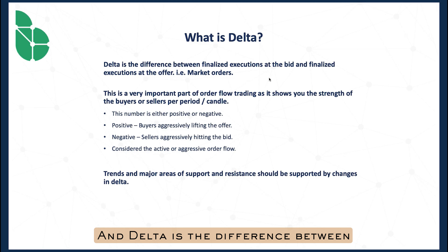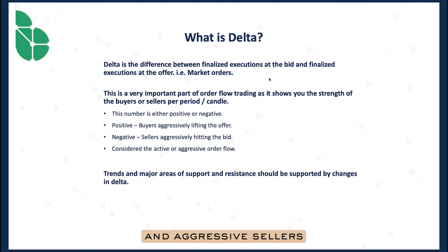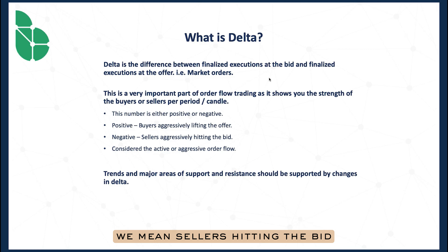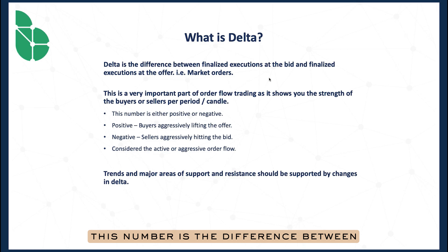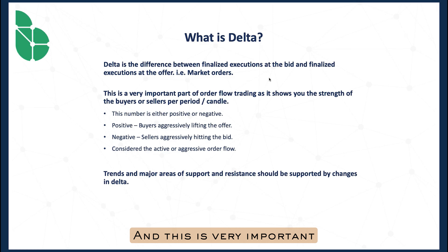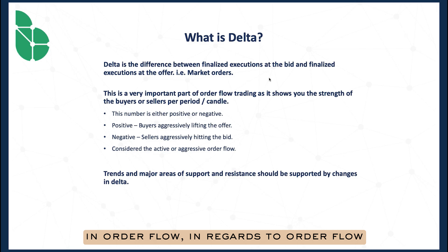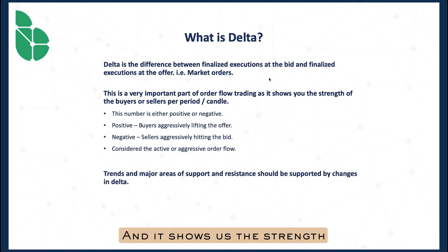Delta is the difference between aggressive buyers and aggressive sellers — the difference between finalized executions at the bid, where sellers are hitting the bid, and finalized executions at the offer, where a buyer lifts the offer and takes available liquidity. This quantity is the difference between aggressive buyers and aggressive sellers. It's a very important metric in order flow, and it shows us the strength of either buyers or sellers per period or per candle.